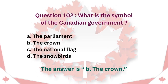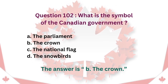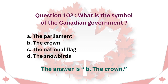Question 102: What is the symbol of the Canadian government? A. The Parliament. B. The Crown. C. The National Flag. D. The Snowbirds. The answer is B. The Crown.